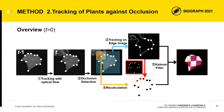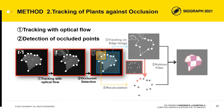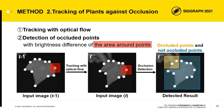This figure is an overview of our tracking method considering occlusion. Each point is tracked on an input IR image. The first processes are tracking with optical flow and detection of occluded points. Points are tracked with optical flow from the previous frame image, then classified as occluded or not occluded. Occluded points are detected with brightness differences of the area around points.